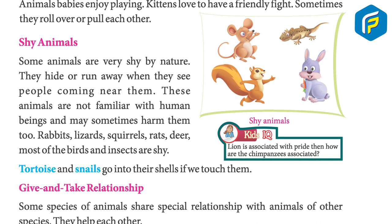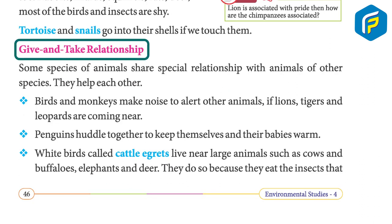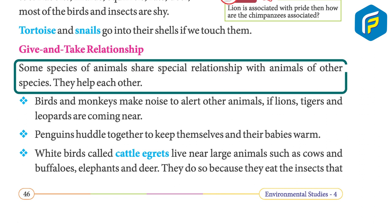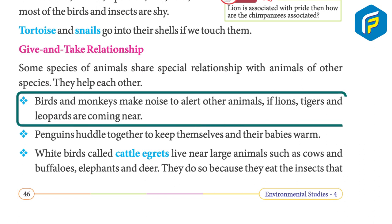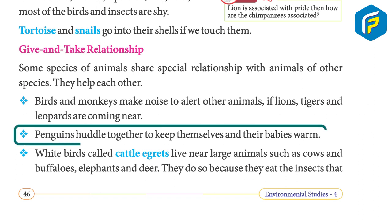Some species of animals share a special relationship with animals of other species — they help each other. Birds and monkeys make noise to alert other animals if lions, tigers, and leopards are coming near. Penguins huddle together to keep themselves and their babies warm.